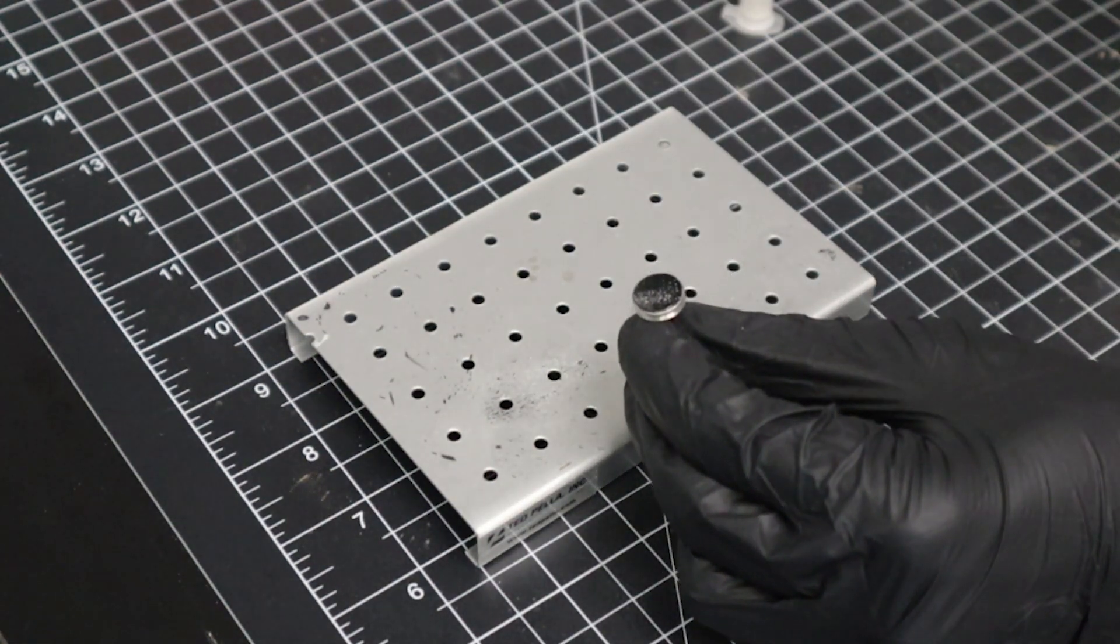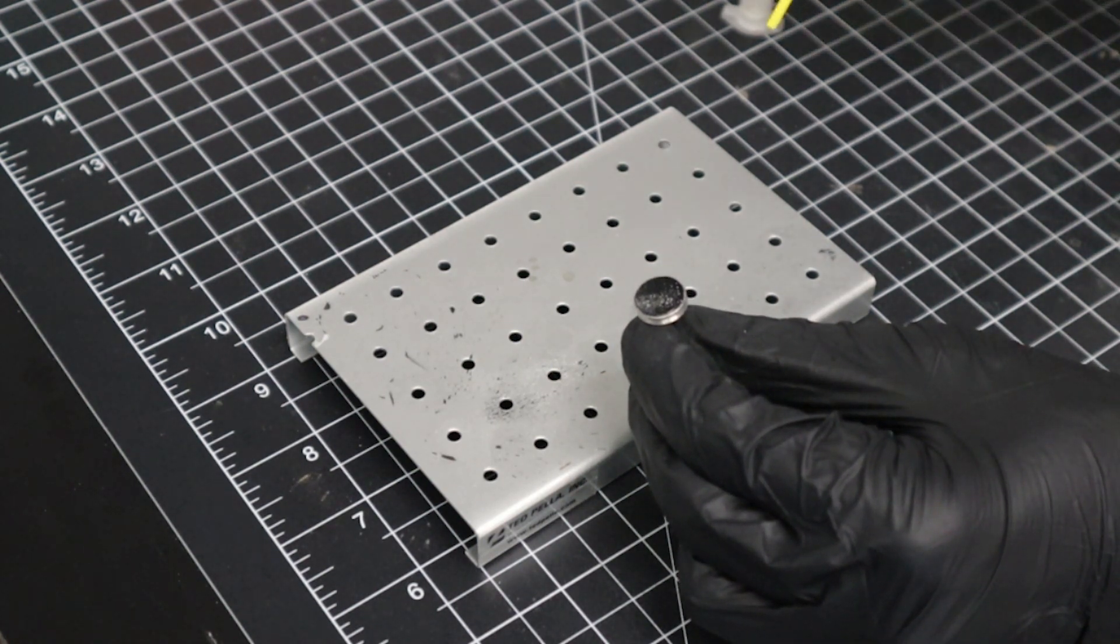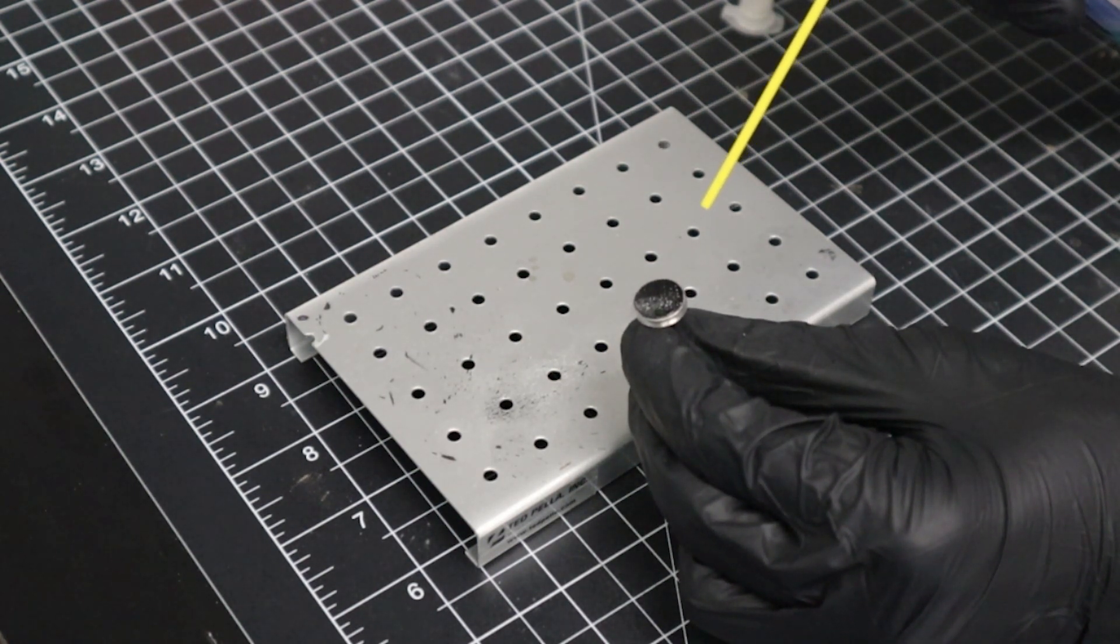To finish the preparation, we remove any loose particles from the stub by blasting it with a canister of compressed air.